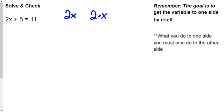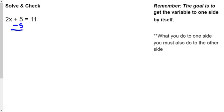Remember when you see a number right up against a letter, that's the same thing as 2 times X — they're just not writing the little multiplication symbol there. The add/subtract number here is five, so we do minus five to the left side of the equation. Now we've got to do that exact same thing to the right side — what you do to the left side, you do to the right side.